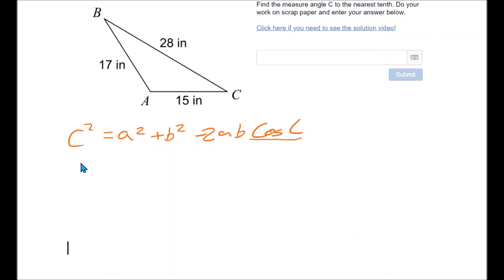So let me fill in the information that I have. So c squared is 17 squared equals a squared. Again, it doesn't really matter which one I call a and b. 28 squared plus 15 squared minus 2 times 28 times 15 times cosine c. Now here's where sometimes students get into trouble.